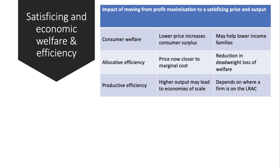From the point of view of productive efficiency, output Q2 is higher than output Q1 in that previous diagram. So the higher output might lead to the firm benefiting from economies of scale, though of course that does depend on where the firm is on its long-run average cost curve.